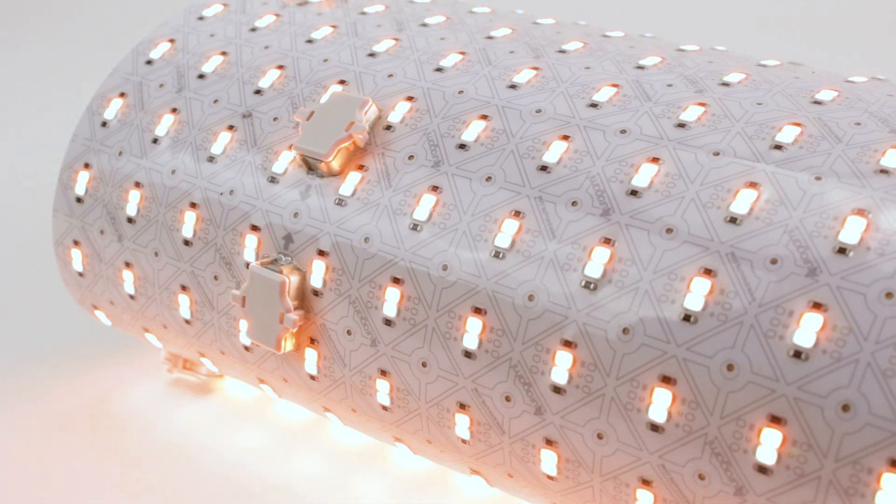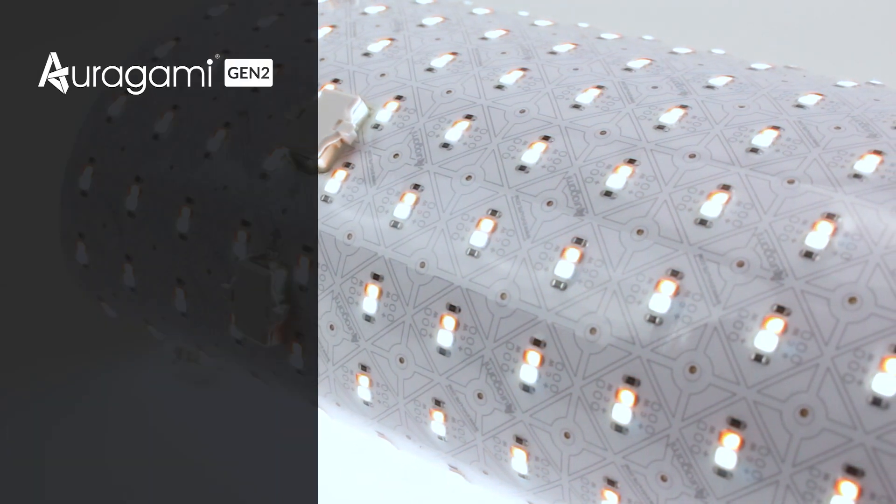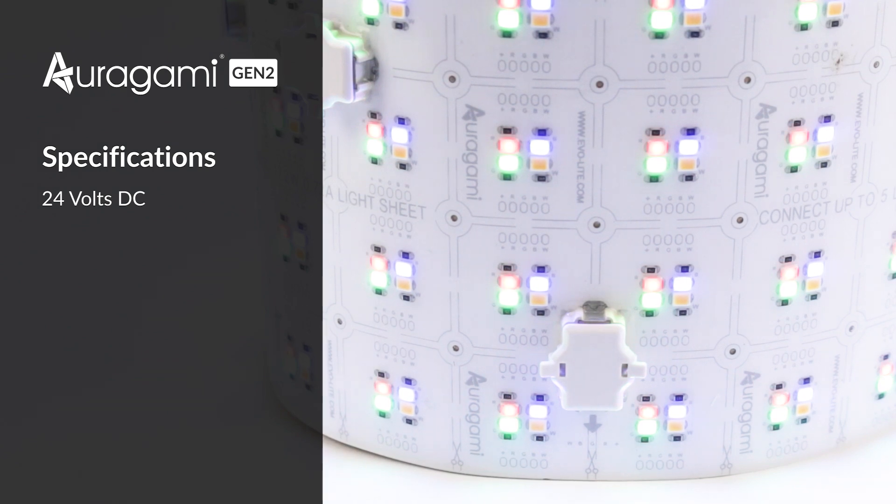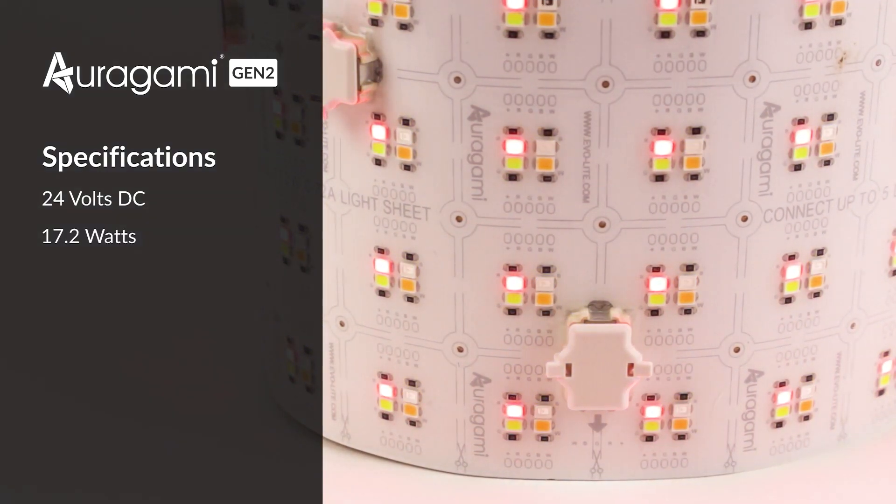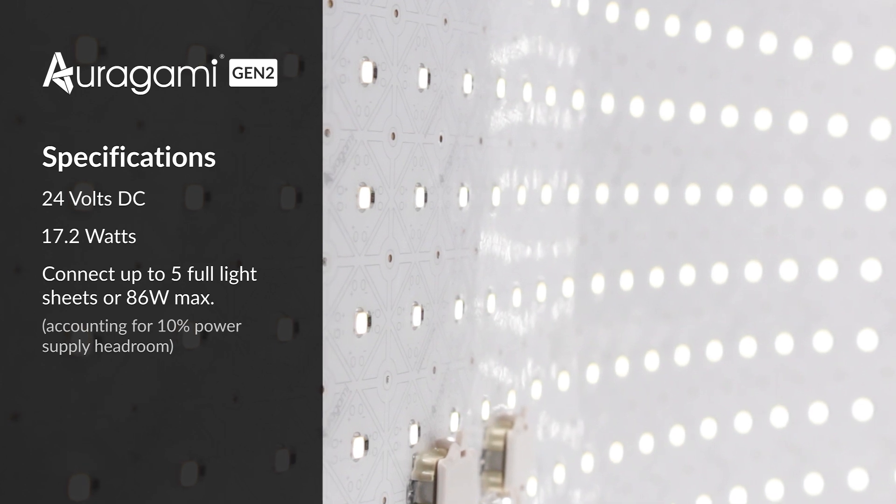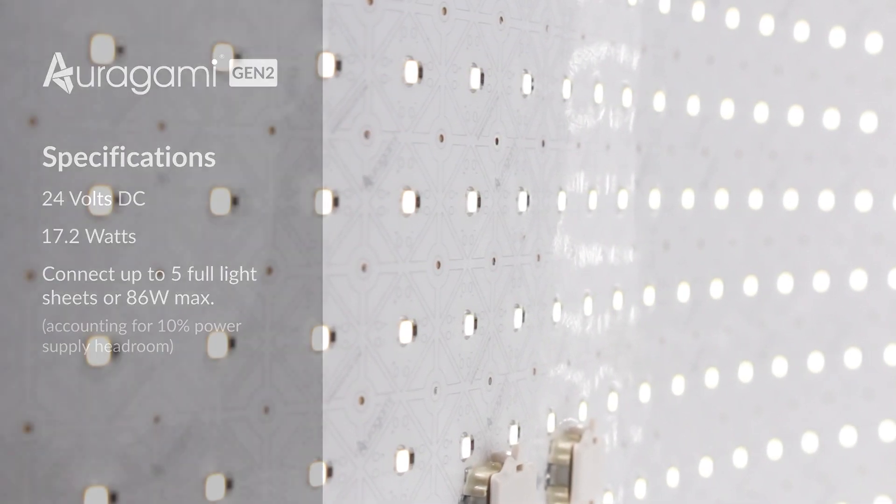Let's get started by reviewing specifications and system requirements. Each origami Gen 2 lightsheet requires 24 volts DC and consumes 17.2 watts. You may connect up to five full lightsheets or 86 watts per class 2 guidelines. For additional specifications, please visit us online.